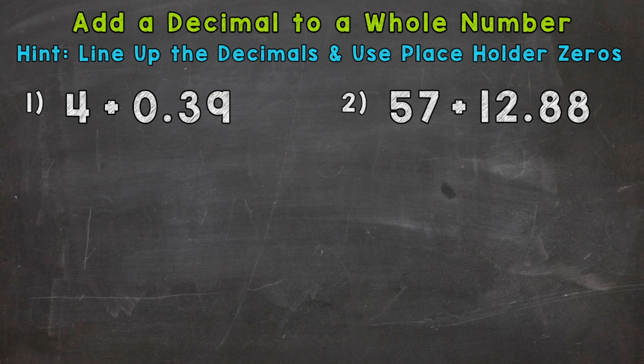So let's jump into the two examples here that we're going to go through together in order to get this down. For number one, we have four plus 39 hundredths. So the first thing we need to do is set this problem up correctly. And at the top of your screen, we have a hint that's going to help us do that. So we need to line up the decimals and use placeholder zeros.